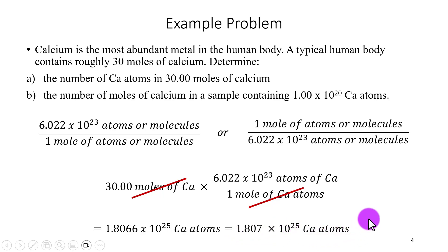Stop and ask yourselves if this answer makes sense. So if you had used this conversion factor instead and divided by this, you would have a very small number. If you have 1 mole of calcium, you have 6.022 times 10 to the 23rd. If you have 30 moles, that means you will have 30 times as much, so a much larger number of atoms. This is a way to check whether you have done the conversion correctly.